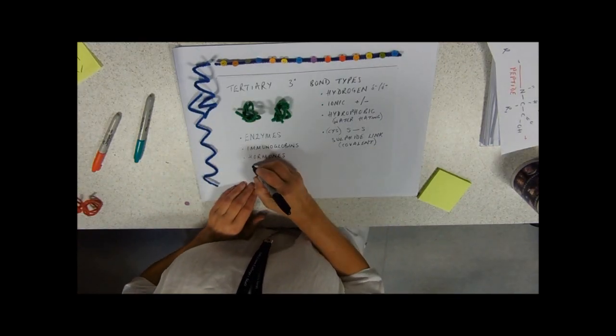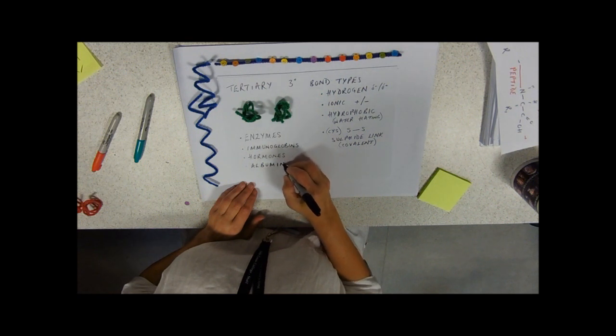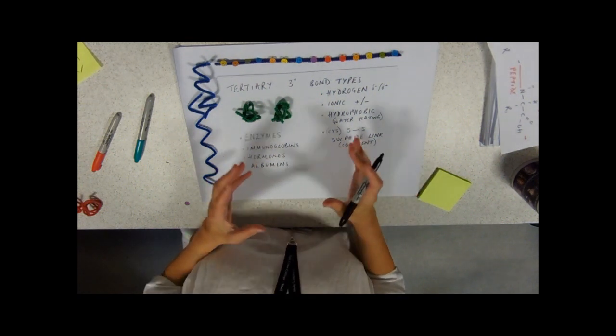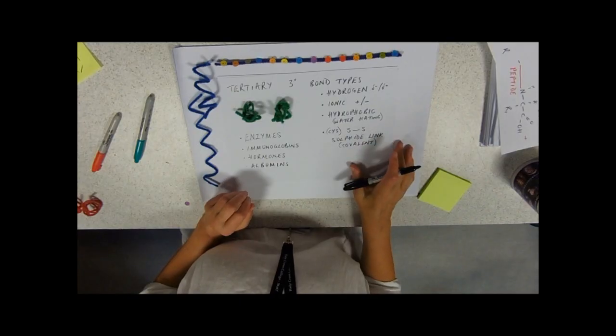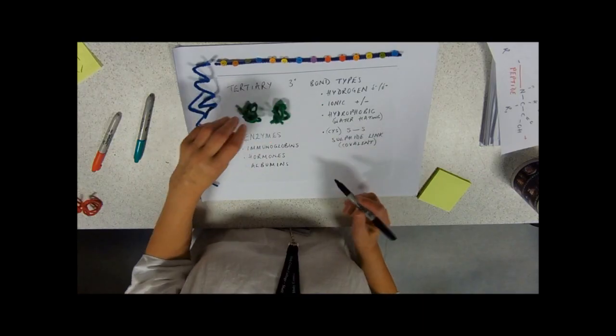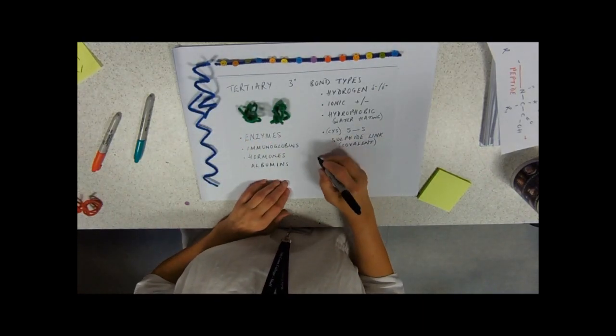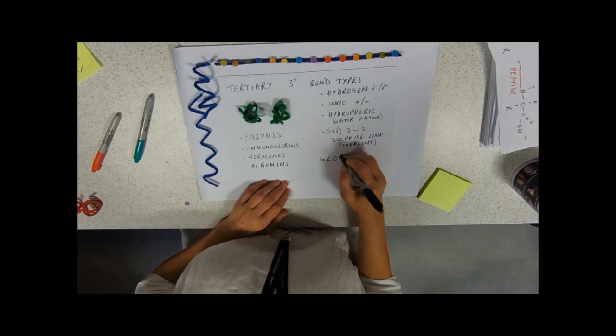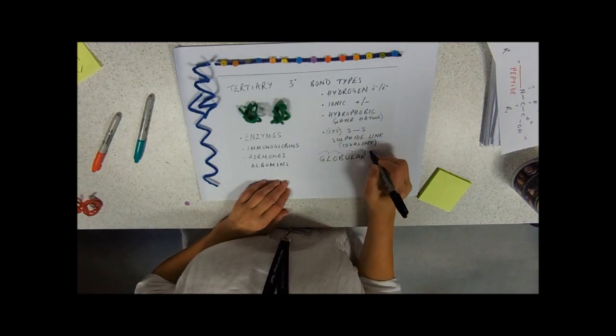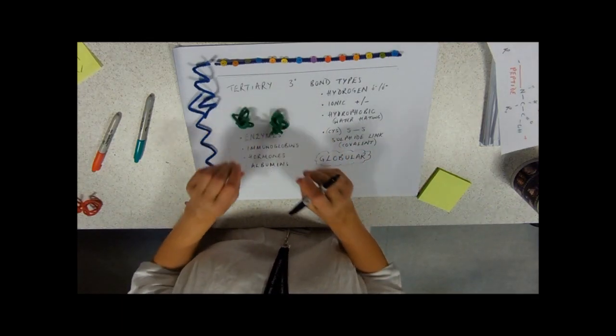So things that do things in the body tend to be tertiary structure proteins. All your blood proteins, your albumins, they're all lovely tertiary structure globular proteins. So that's tertiary structure, further folding of the secondary, held in place by four types of bonds. And you need to know some examples. These are often referred to as being globular proteins because of their specific 3D shape, which determines function.